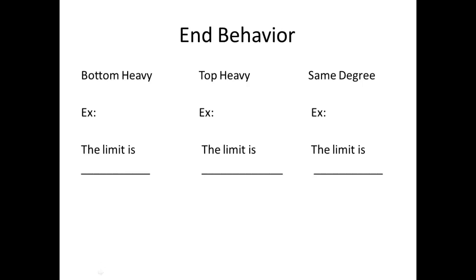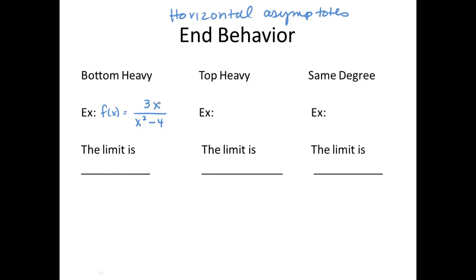Here's a little lesson on asymptotes — specifically the horizontal asymptotes we saved from our first video on vertical asymptotes. My first example I'm going to call bottom-heavy, meaning the exponent is larger in the denominator. For example, 3 over x squared minus 4 — even if I throw a 3x on top, the bottom is still much heavier. The limit as we go towards both positive and negative infinity is going to be 0.